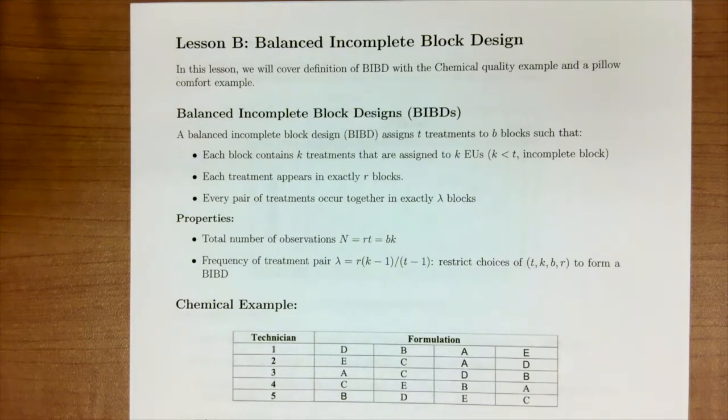If we think about the RCBD, we had our block size equal to the number of treatments because every treatment appears in every block. But in this design, that's not the case. Each treatment appears in exactly r blocks. So we do have replication and we see treatments the same number of times.